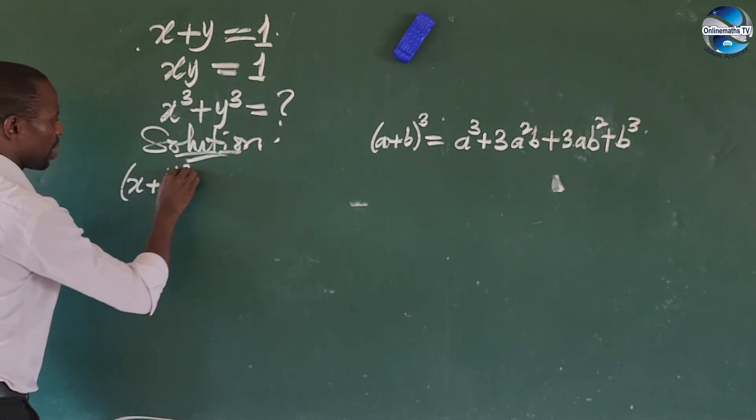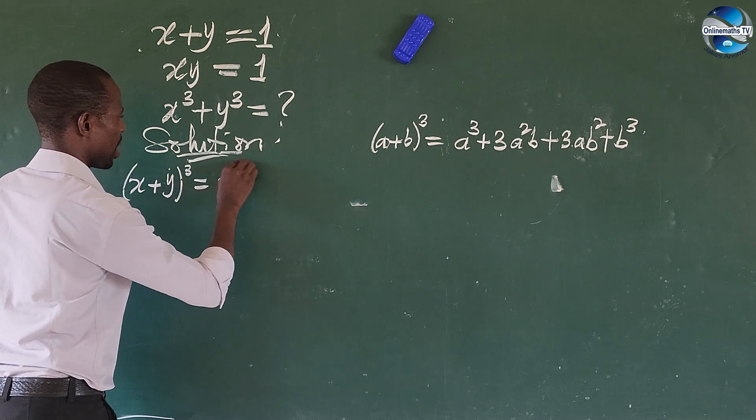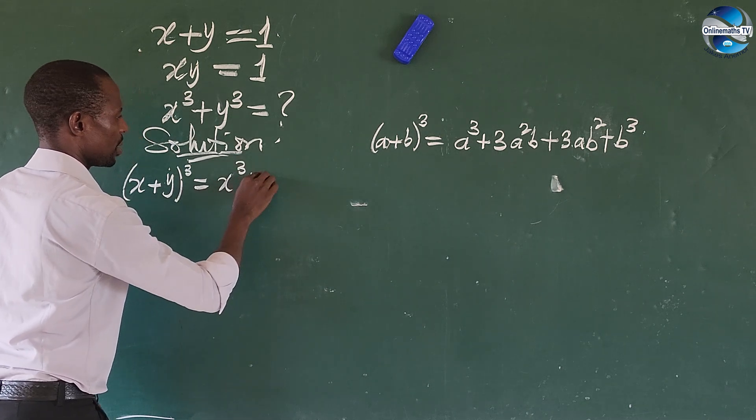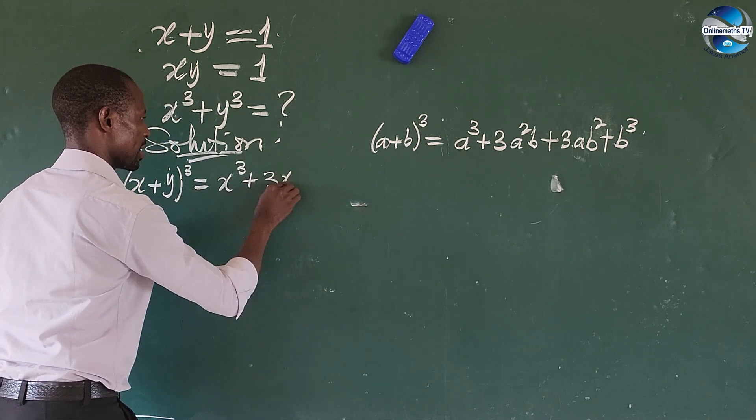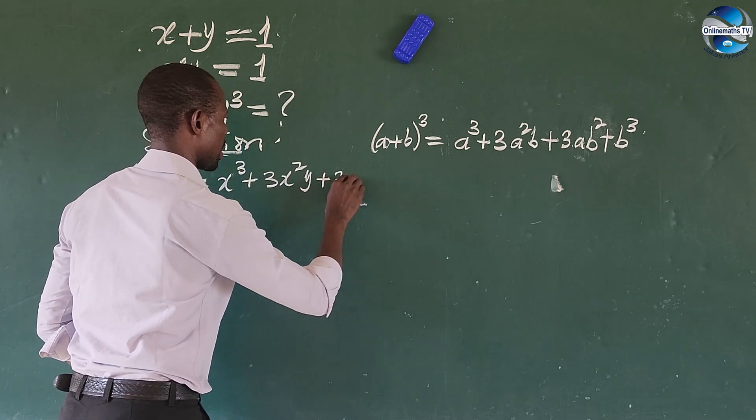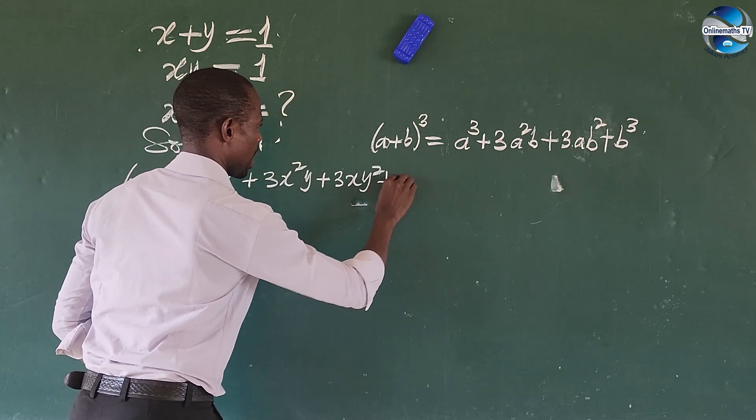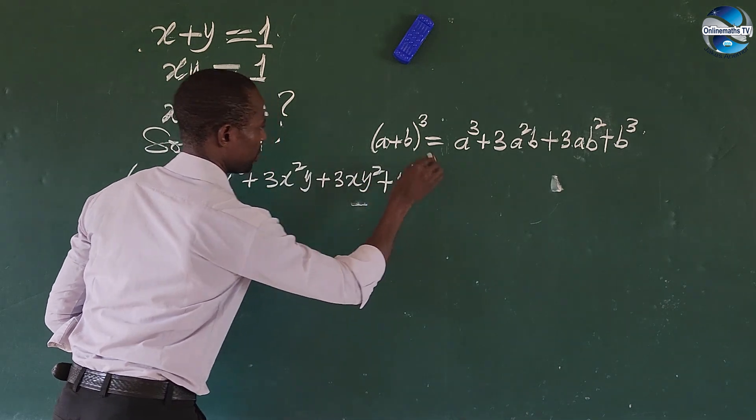This is equal to x to the power of 3 plus 3x²y plus 3xy² plus y to the power of 3.